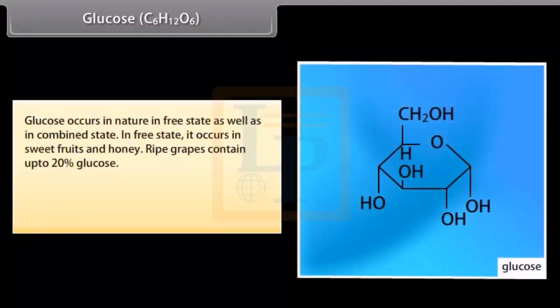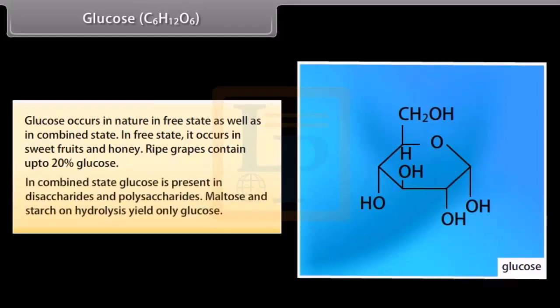Glucose (C₆H₁₂O₆) occurs in nature in both free and combined states. In free state, it occurs in sweet fruits and honey; ripe grapes contain up to 20% glucose. In combined state, glucose is present in disaccharides and polysaccharides. Maltose and starch on hydrolysis yield only glucose.